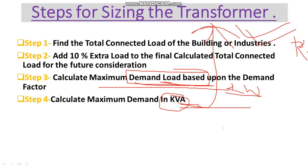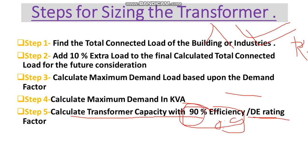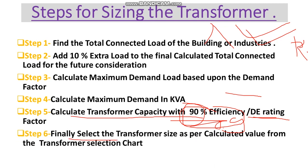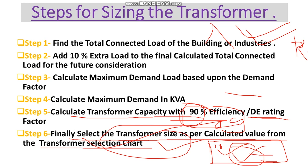In Step 5, calculate the transformer capacity with 90% efficiency, or we can say taking a derating factor of 0.9. Then finally in Step 6, select the transformer size as per the calculated value from the transformer selection chart, where we have ratings from lower to higher and we select accordingly.